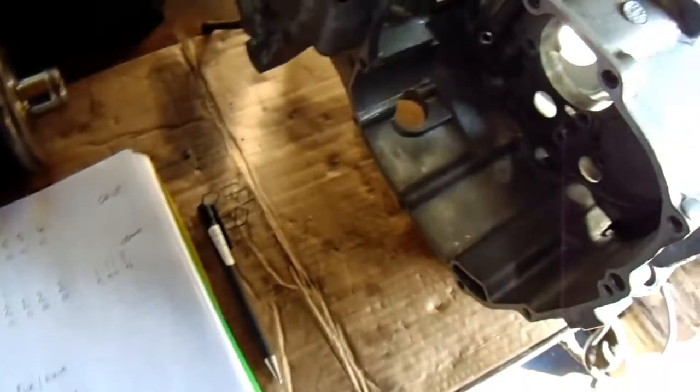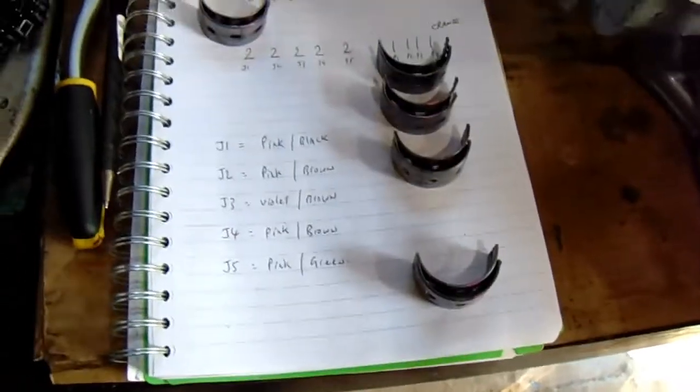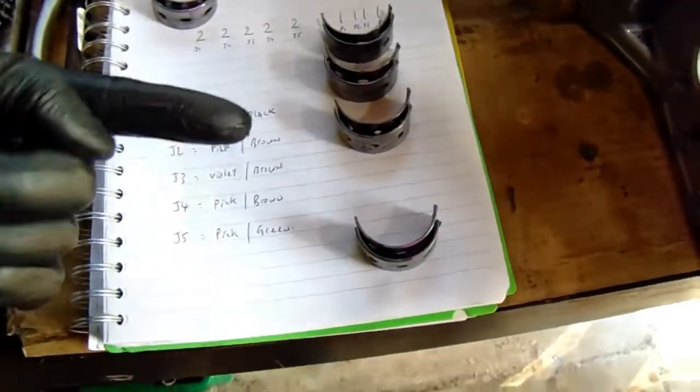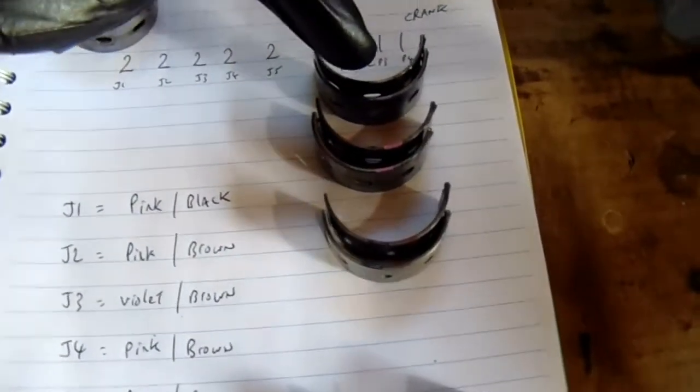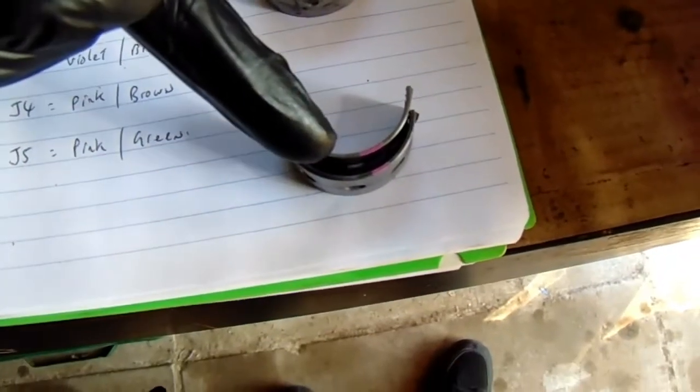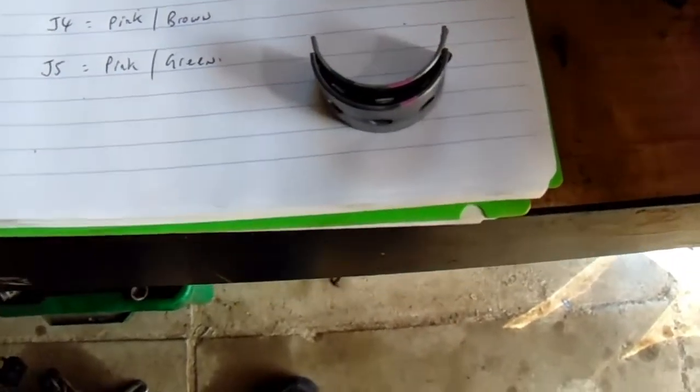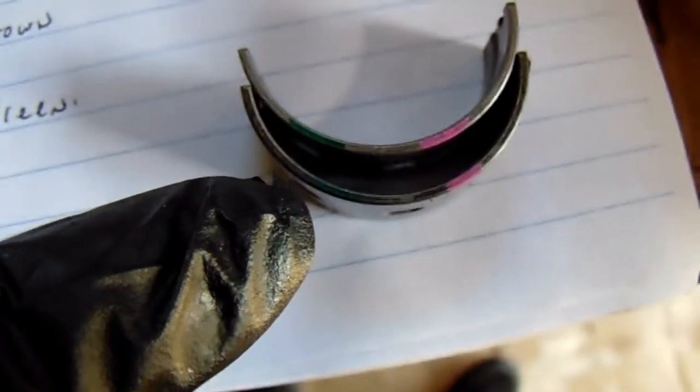Just give me two minutes while I have a look at these shells because I can see the colors on the shells. Right, so I'm one bearing short and it's the journal four. So the way I've done it, that's journal one, journal two, journal three, journal four, journal five. I don't know if you can see this but journal five is pink and green.